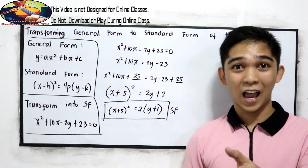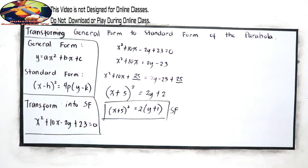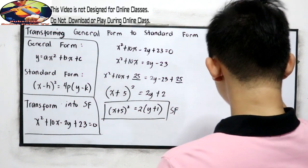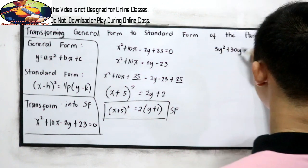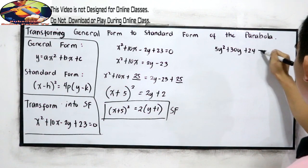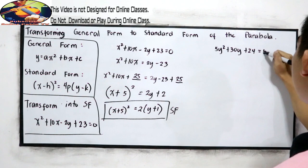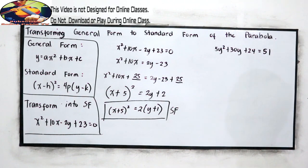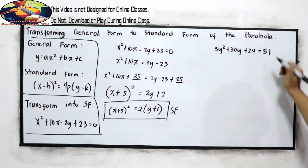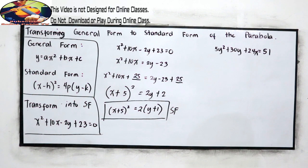Now, your turn. I want you to try this problem. 5y squared plus 30y plus 24 equals 51. 5y squared plus 30y plus 24 is equal to 24x equals 51.